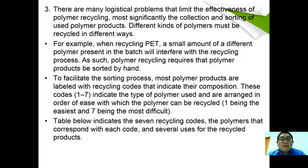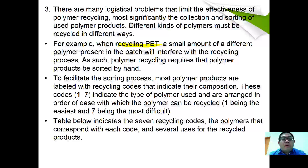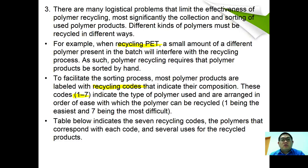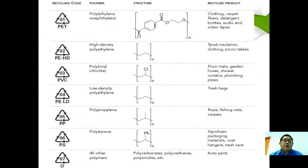There are many logistical problems that limit the effectiveness of polymer recycling — most significantly collection and sorting. For example, when recycling PET, even a small amount of a different polymer present in the batch will interfere with the recycling process. To facilitate sorting, most polymers are labeled with recycling codes numbered 1 to 7, indicating the type of polymer and arranged in order of ease of recycling — 1 being the easiest and 7 being the most difficult.